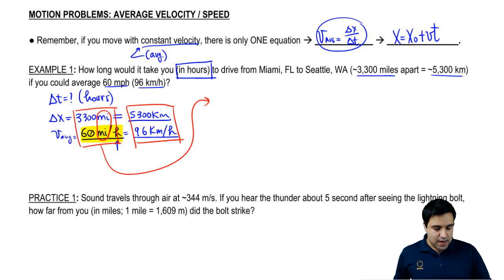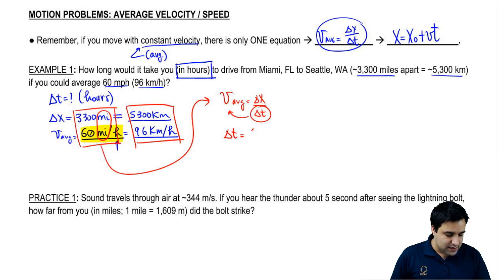So I'm going to do it with this one just for no reason. V average is delta x over delta t. So if you're solving for time, you flip things around, t comes up, v goes down. Delta t is delta x over v average.